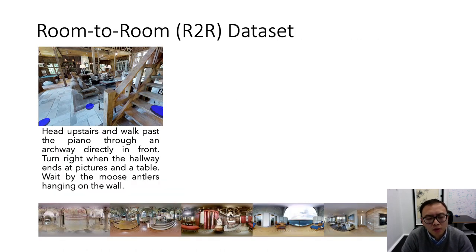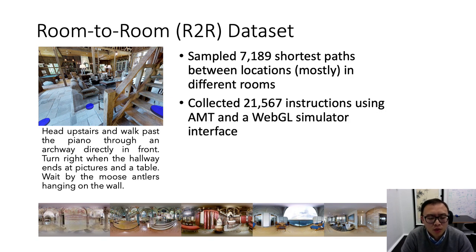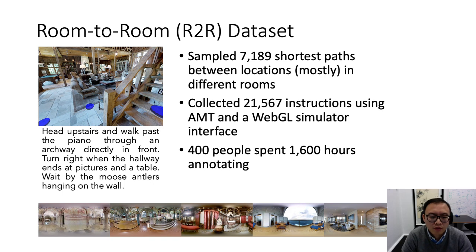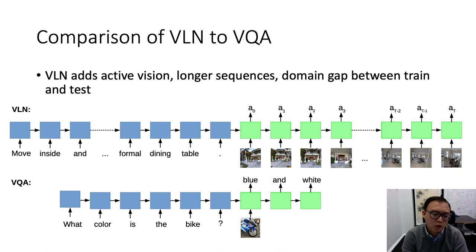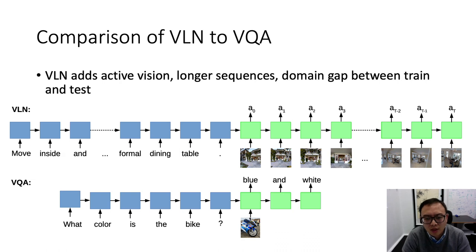Here is one example from the dataset. We sampled 7,000 shortest paths between locations in different rooms and collected 21,000 instructions using AMT and a WebGL simulator interface. In total, 400 people spent 1,600 hours annotating. Compared to the classic VQA task, VLN adds active vision because the visual input is always changing during navigation. As a sequence-to-sequence problem, the sequences in VLN are much longer at both encoder and decoder sides, and there is a bigger domain gap between training and testing sets.